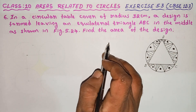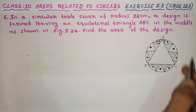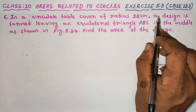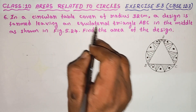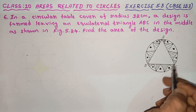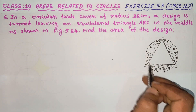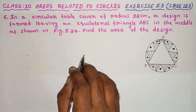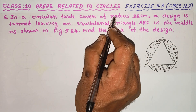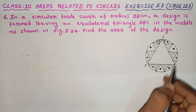In this question, an equilateral triangle is inscribed in a circular table cover of radius 32 cm. A design is formed leaving the equilateral triangle ABC in the middle. To find the area of the design, we subtract the area of the equilateral triangle from the area of the circle.